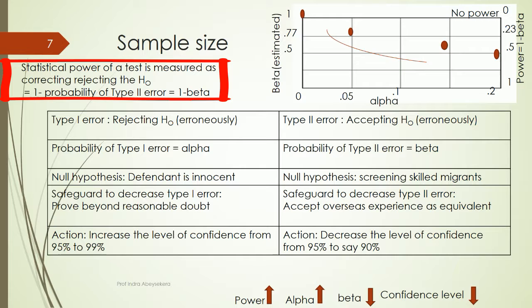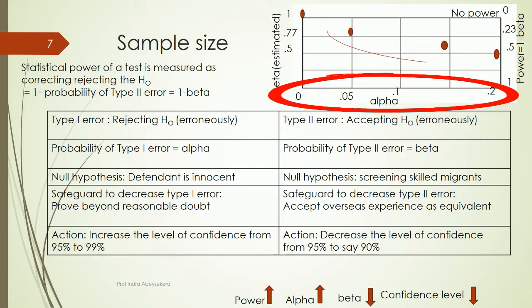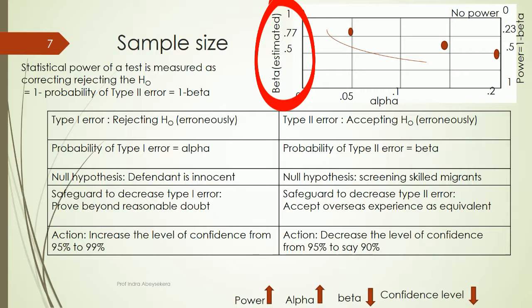Power is equal to 1 minus beta. Alpha is the level of non-confidence that we have — if you have 100% confidence, alpha is zero; if you have 99% confidence in our findings, then alpha is 1%. Beta is estimated based on various characteristics like sample size, and then based on beta and alpha, we determine the power.